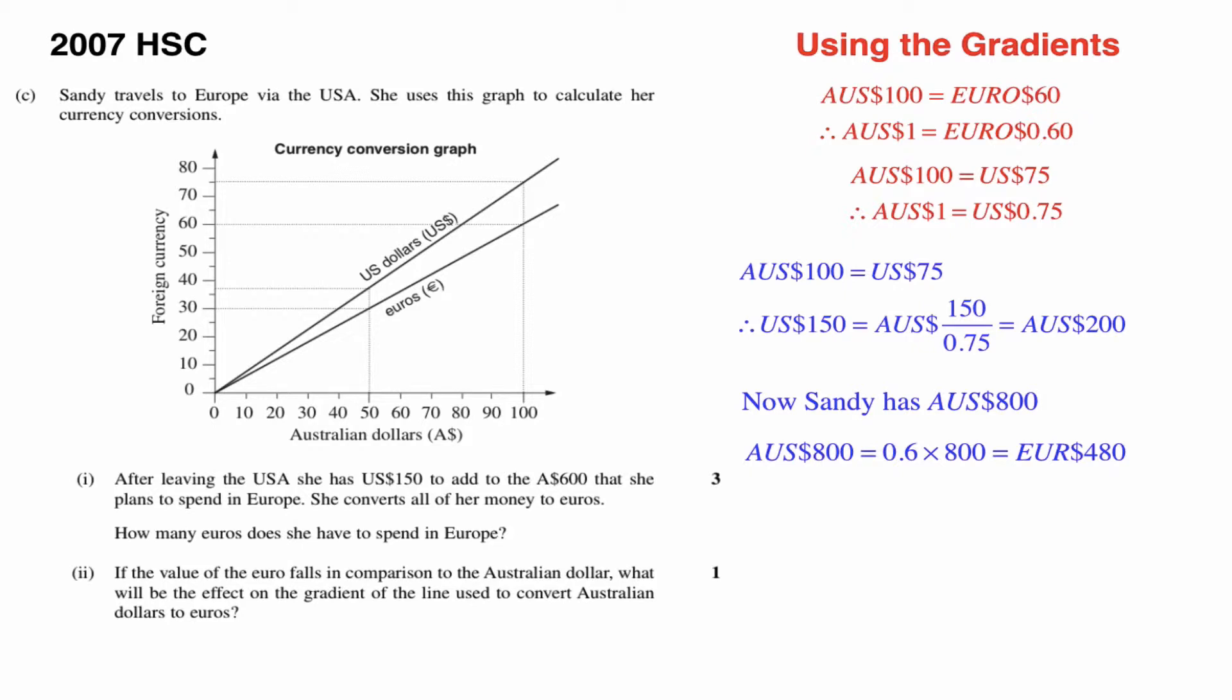Part two says, if the value of the Euro falls in comparison to the Australian dollar, what will be the effect on the gradient of the line used to convert Australian dollars to Euro? Well, what that actually means is that an Australian dollar is worth more Euro dollars than it was previously because the value of the Euro is falling relative to the Australian dollar. That means that the gradient would get steeper because one Australian dollar would be worth more Euro dollars.